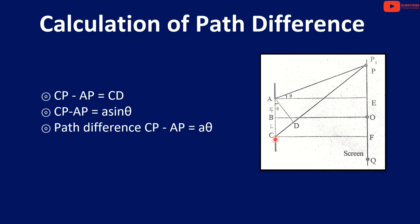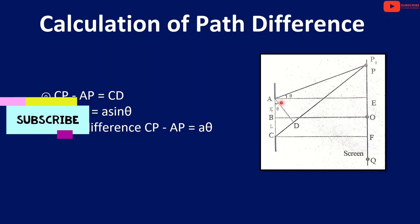In triangle CAD, theta is the angle. Sin theta equals CD divided by AC (which is 'a'). Therefore CD equals a·sin(θ). So the path difference CP minus AP equals CD equals a·sin(θ). Since theta is small, sin(θ) ≈ θ, so the path difference equals a·θ.